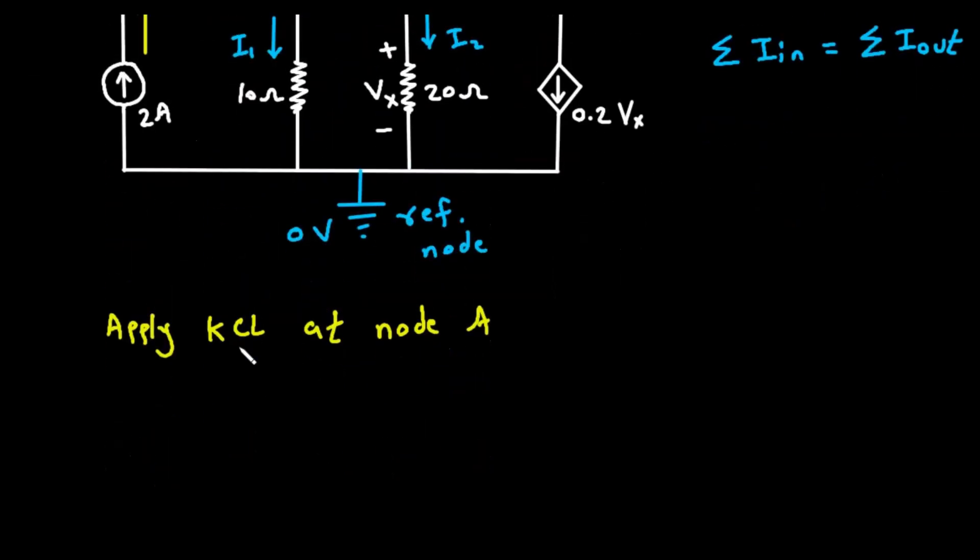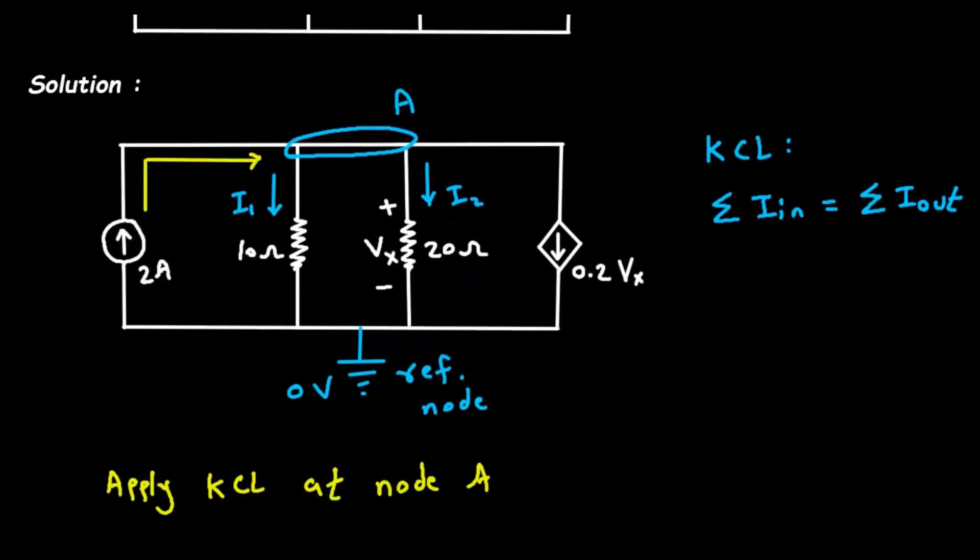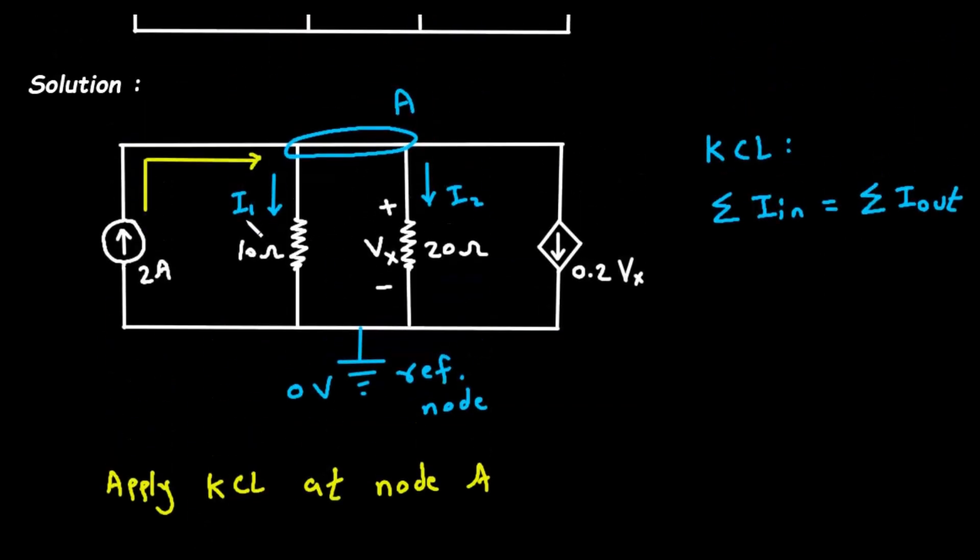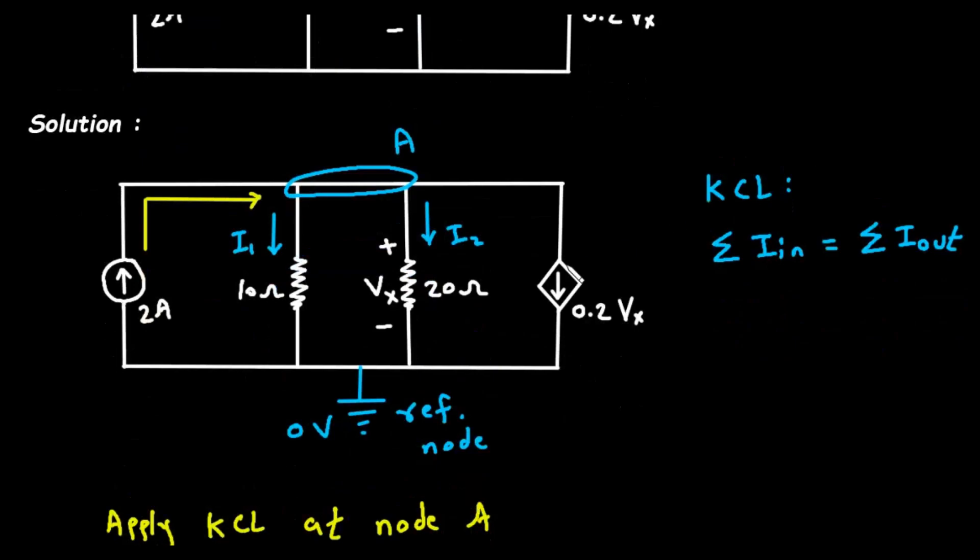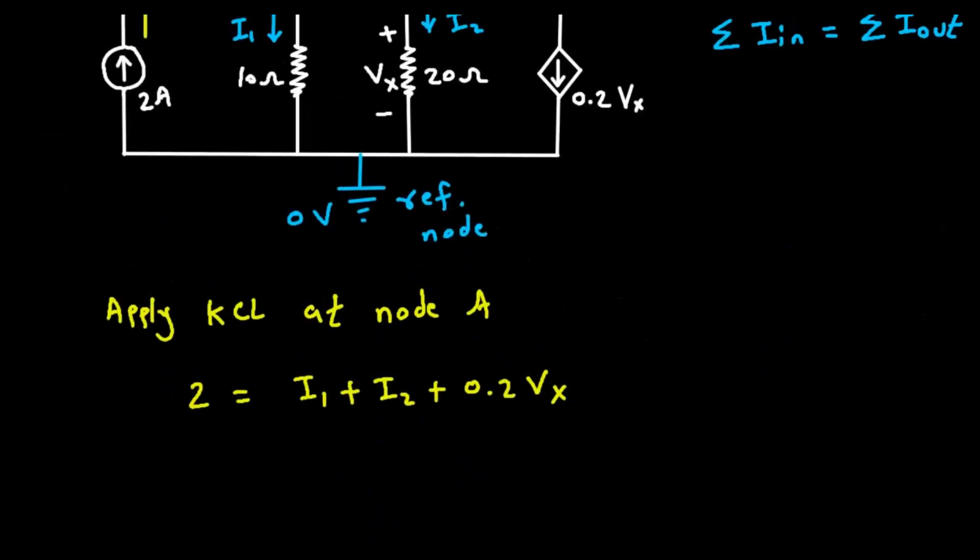So let's put the entering current which is two ampere equal to, now leaving currents are I1 plus I2 plus 0.2Vx. This is a dependent current source, it is a voltage dependent current source.